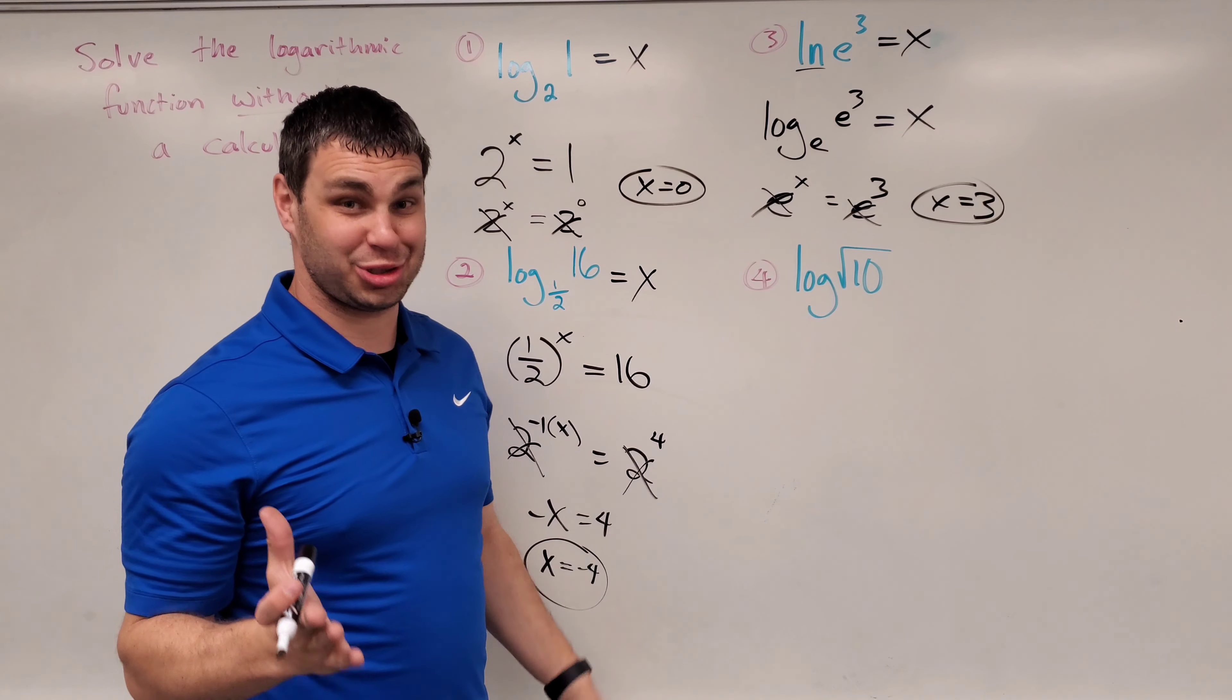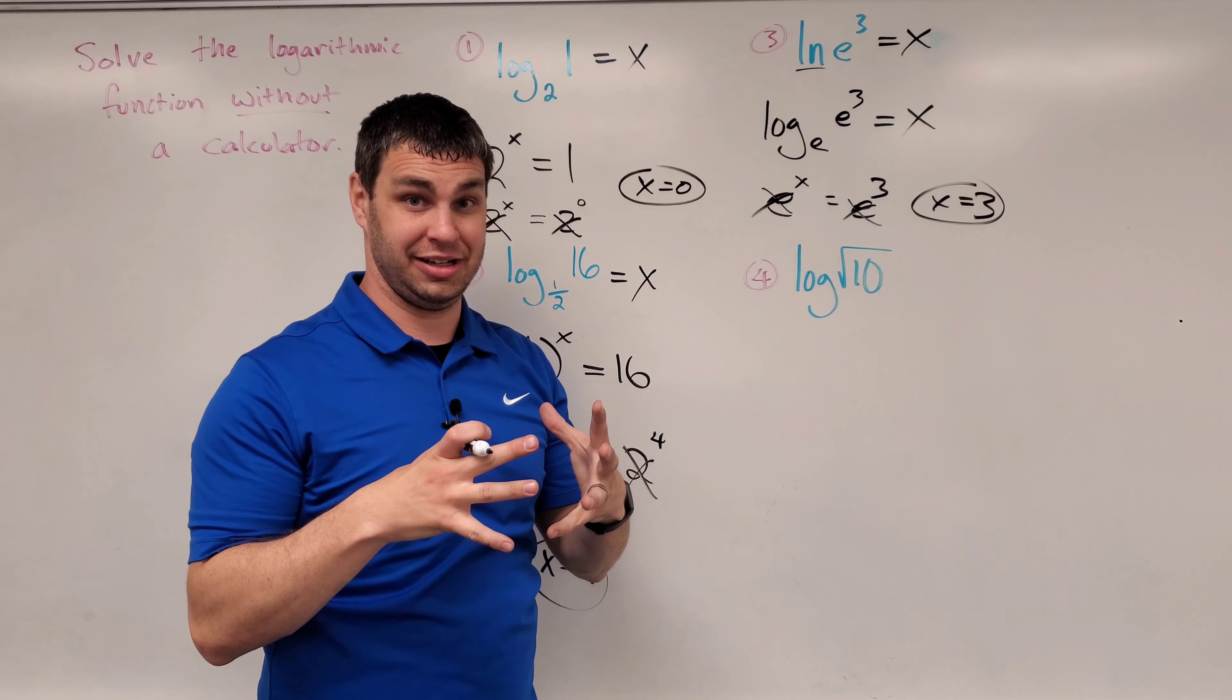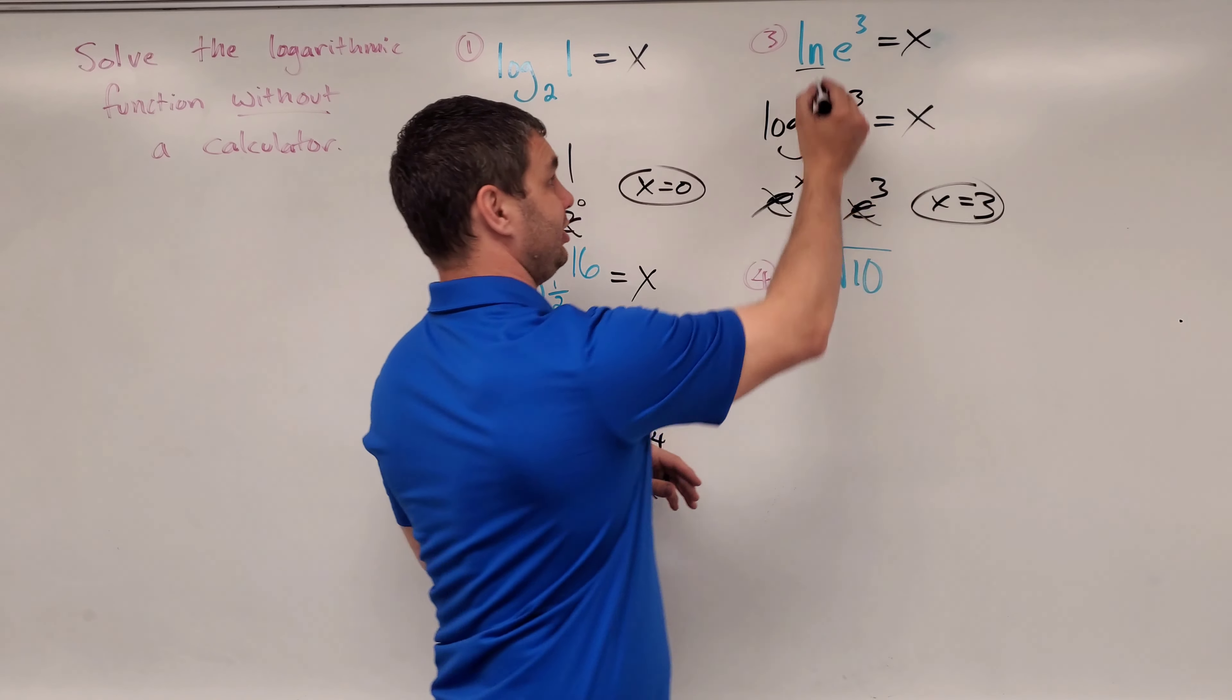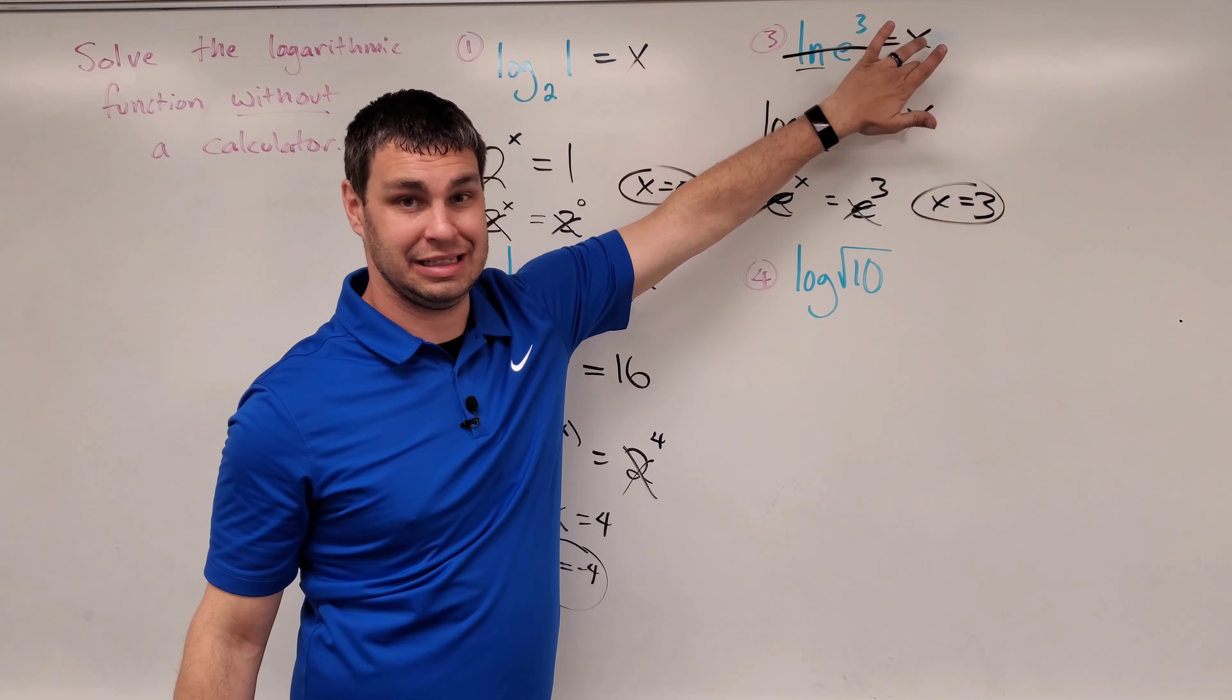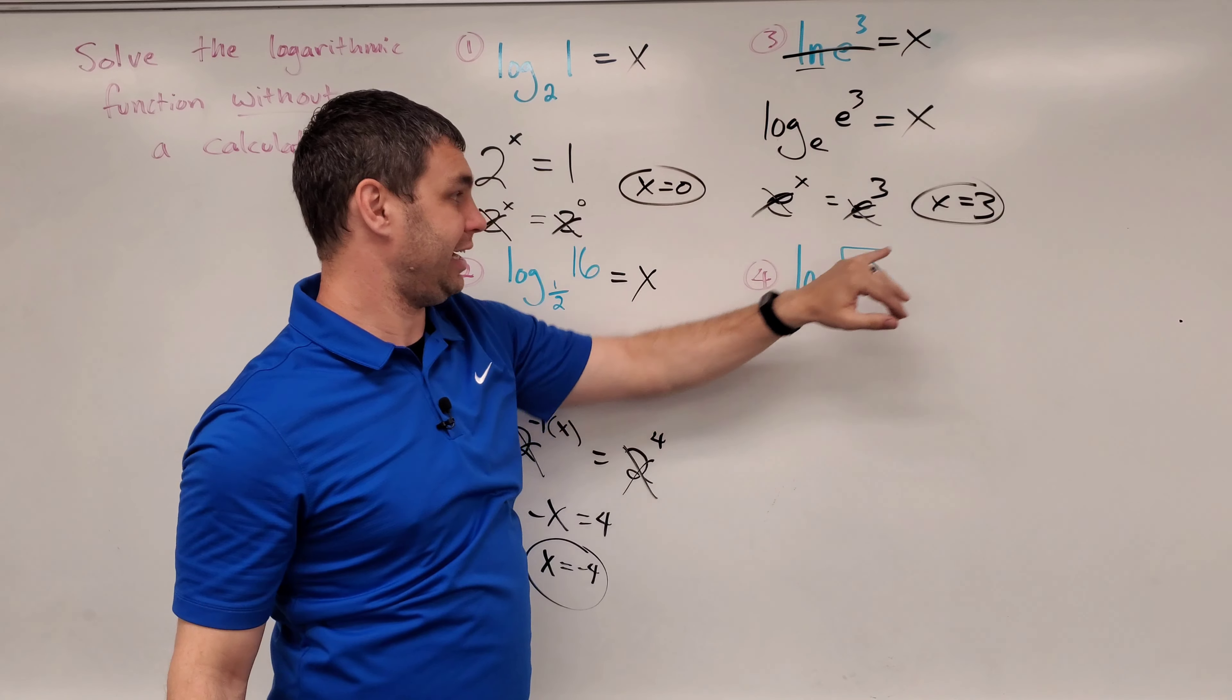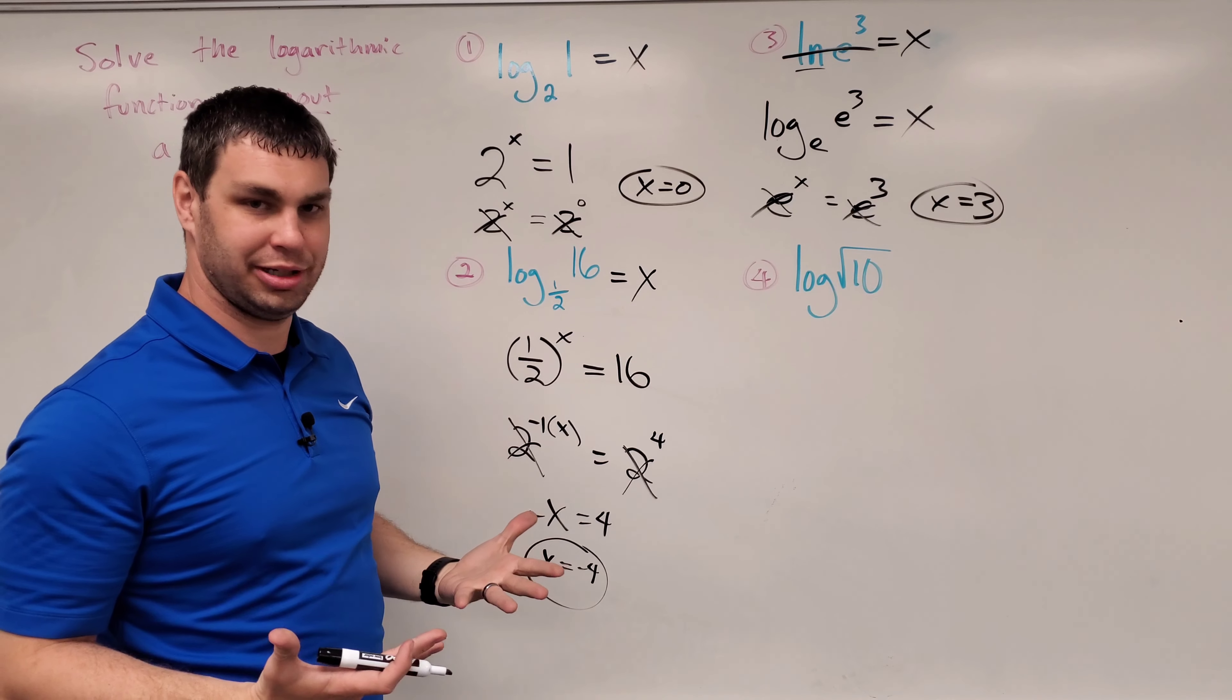Now some of you might have caught on by now, but there's a shortcut with this. Whenever you see natural log and e next to each other, they just cancel right away. So I could have just crossed those out and had 3 equals x right away, just like I had in my answer. So if you know that shortcut, go ahead and use it. If you didn't know it, now you do.